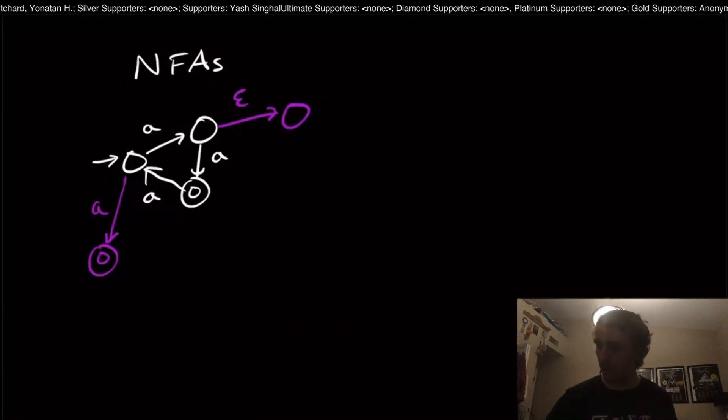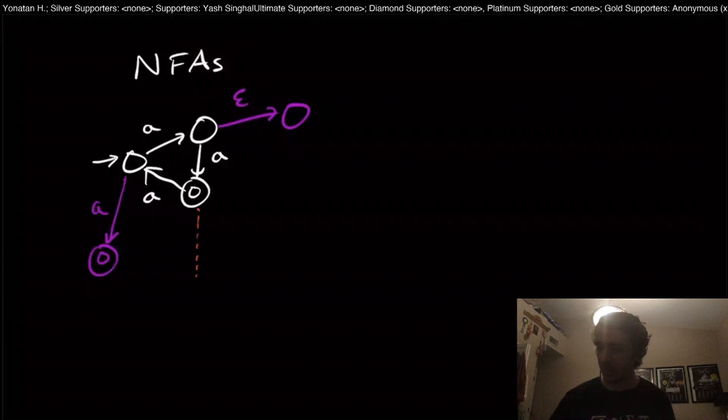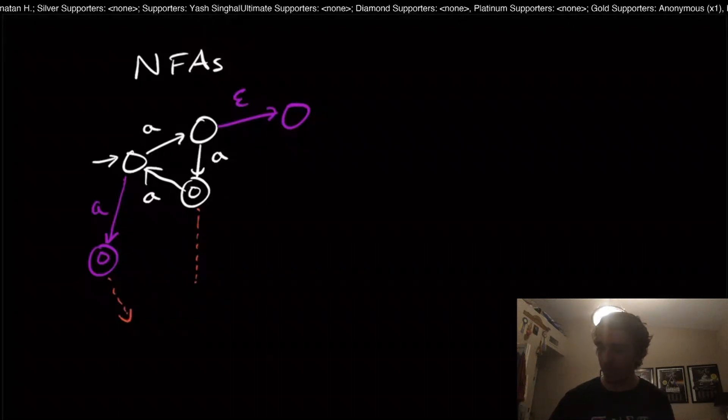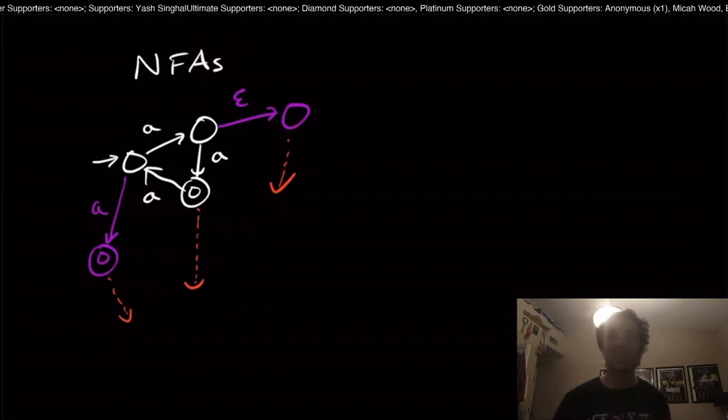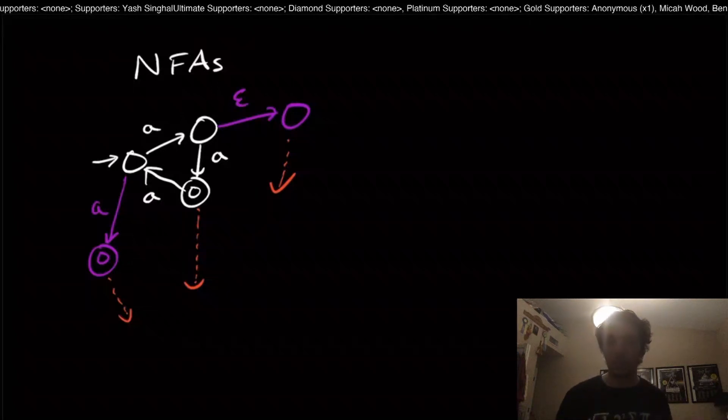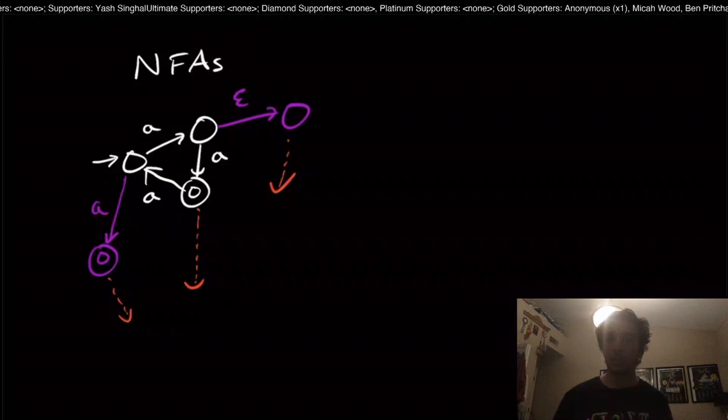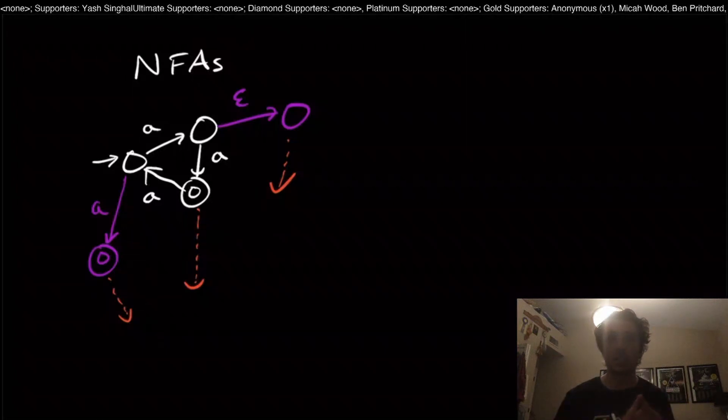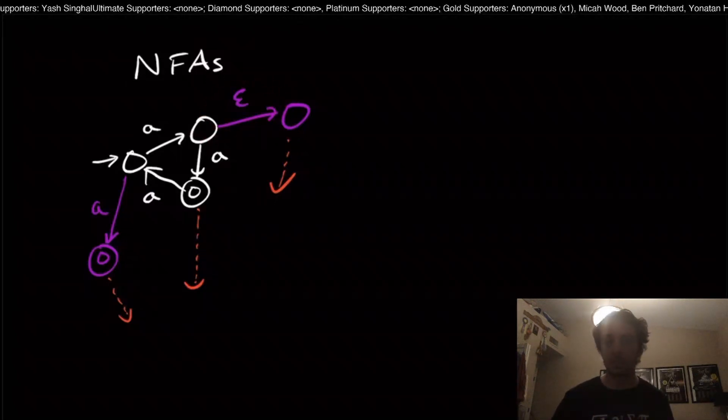We can also have the ability of leaving out transitions. This state or this state or even this state don't have a transition on input A. We're allowing ourselves to have choices here. We can have exactly one transition on a particular symbol, multiple or zero, and we can have epsilon transitions as many as we want.